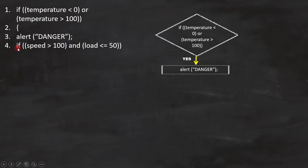Now let's move to the fourth line. If speed is greater than 100 and load is less than equal to 50, now the question is where to place this condition in the flowchart. Since the condition on line 1 is not yet ended, we have to put this condition under the same branch, like this in the flowchart.